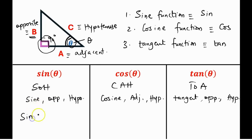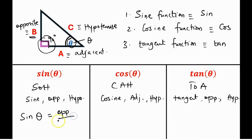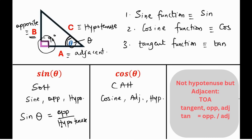To apply this mathematically: sine of the angle of interest theta equals the opposite side divided by the hypotenuse. That is the sine trigonometric function connecting the opposite side and the hypotenuse side of the right triangle.